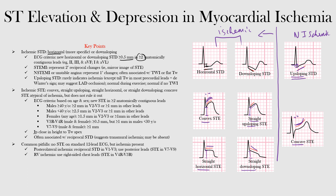Recent guidelines define ischemic ST elevation based on age and sex, requiring changes in at least two anatomically contiguous leads. In men 40 years and older, ischemic ST elevation is ≥2 mm in leads V2 and V3, and ≥1 mm in all other leads. In men under 40, it is ≥2.5 mm in V2 and V3, and ≥1 mm elsewhere. In women of any age, it is ≥1.5 mm in V2 and V3, and ≥1 mm in all other leads.